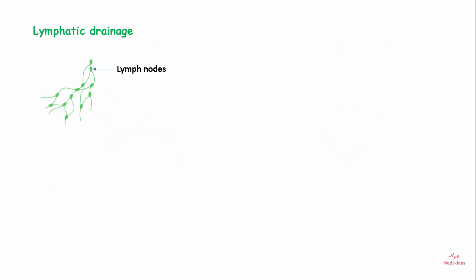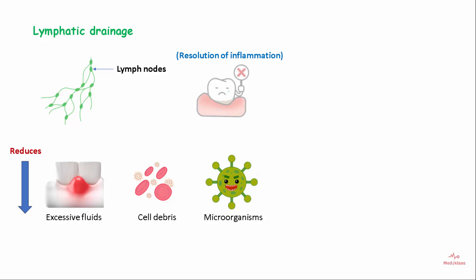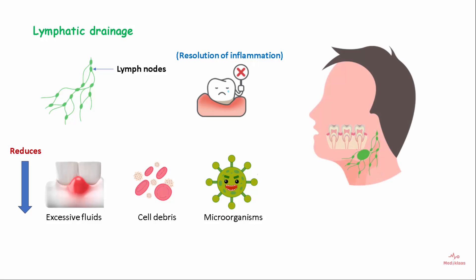The lymphatic system of the gingiva is well developed, and its functions are to remove excessive fluids, debris from the cells, and microorganisms. This helps in controlling the diffusion and resolution of inflammation. The lymphatic drainage of the gingiva joins the network of the periosteum of the alveolar bone and moves to the submandibular lymph nodes.